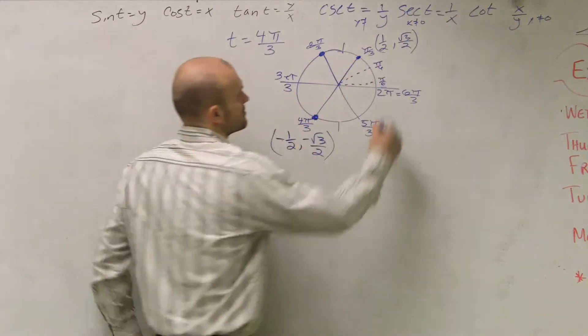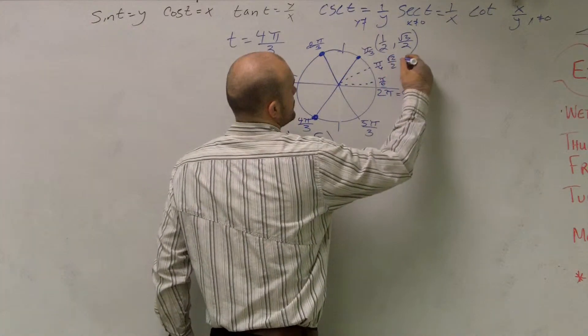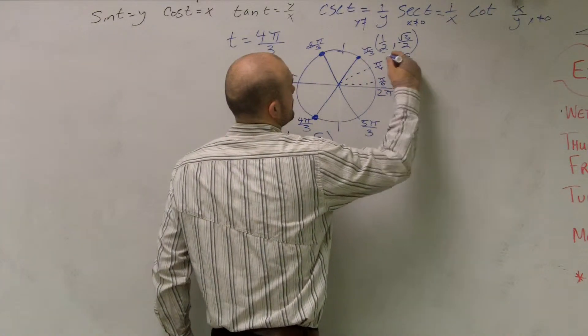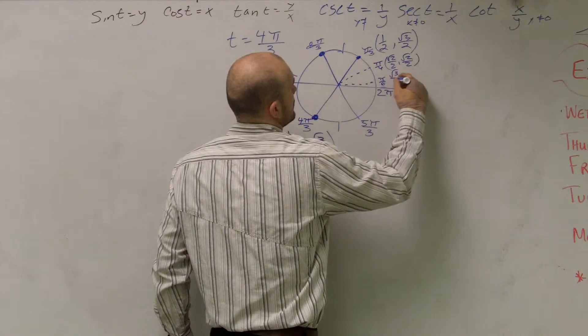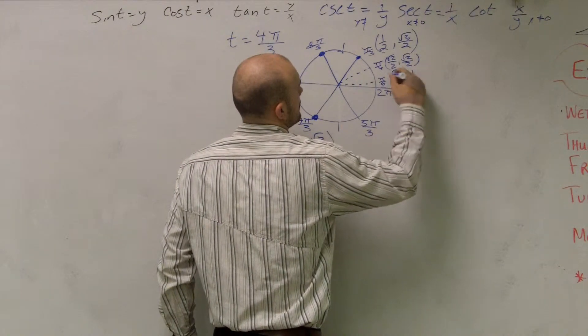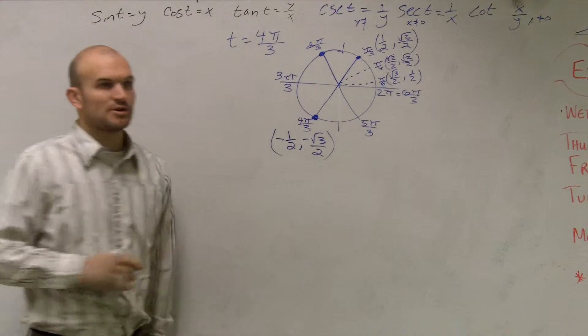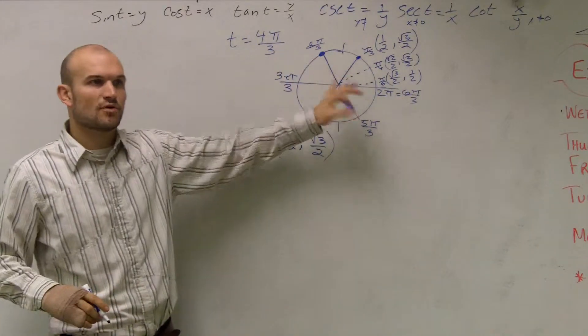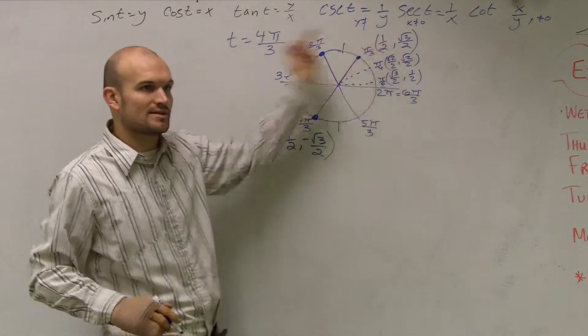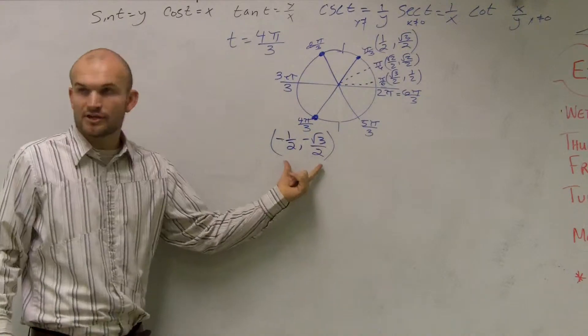So now this point would be negative 1 half radical 3 over 2. And then if I reflect that over my x axis, now I have a negative 1 half and a negative radical 3 over 2. Does everybody see how I found that point? You don't need to memorize the whole unit circle. Just memorize one point and then use your reflections to where it is. Okay? So there's three points you guys need to memorize. Just memorize those three points and then just use reflections for them. However, we're only using this point, so that's what you're going to do. So therefore, there's my reflections.